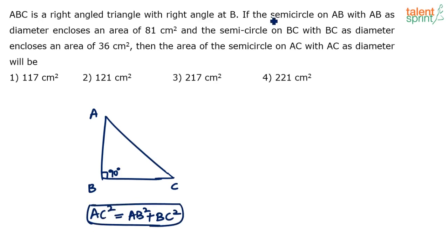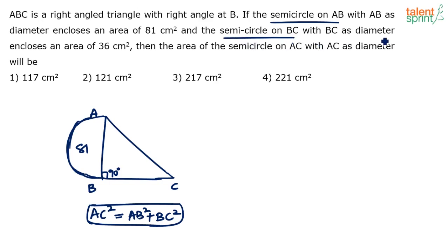Now, the semicircle on AB with AB as diameter — so we consider AB as the diameter and draw a semicircle. This semicircle on AB encloses an area of 81 centimeter squared. And the semicircle on BC with BC as diameter — consider BC as diameter and draw a semicircle on BC. This semicircle encloses an area of 36 centimeter squared.